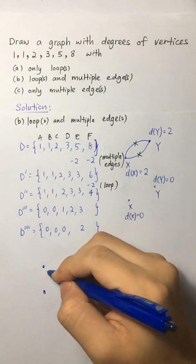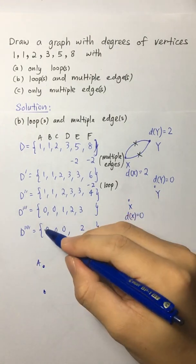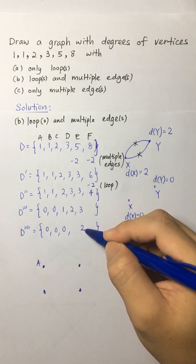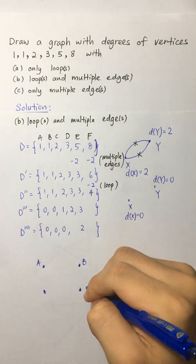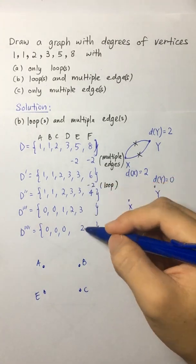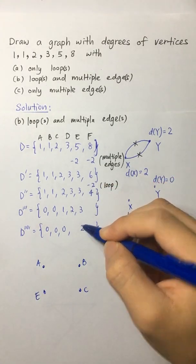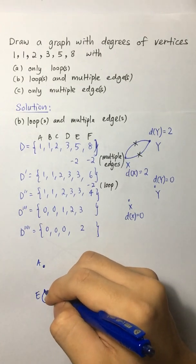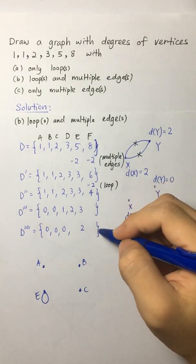So I can just draw 4 vertices. Okay, so now I label it A, B, C, and E. A, B, C, and E. And then we have a loop at E. So I just draw a loop here.